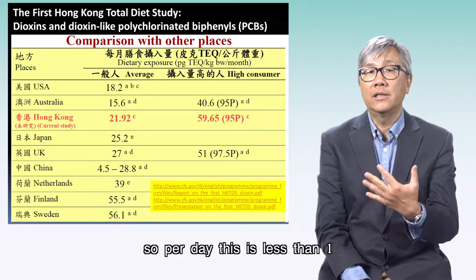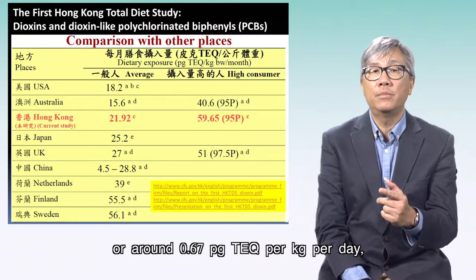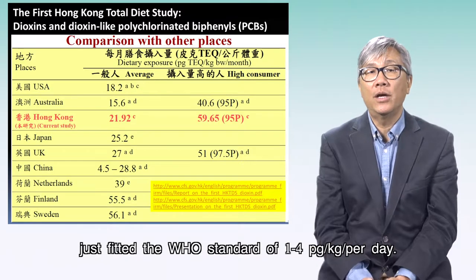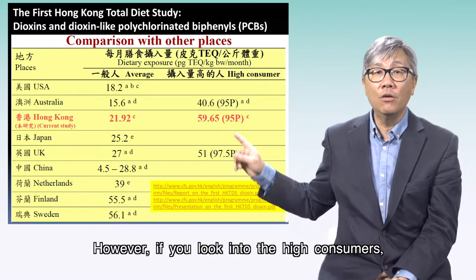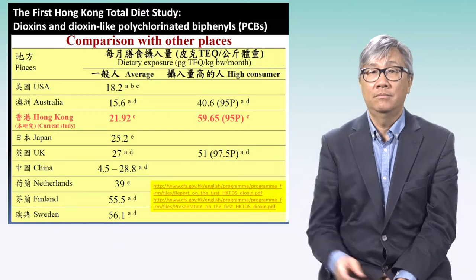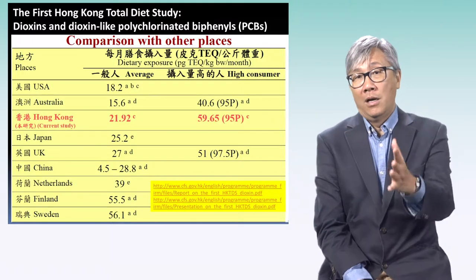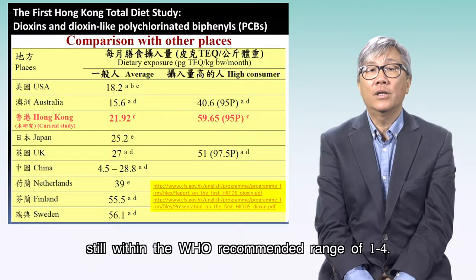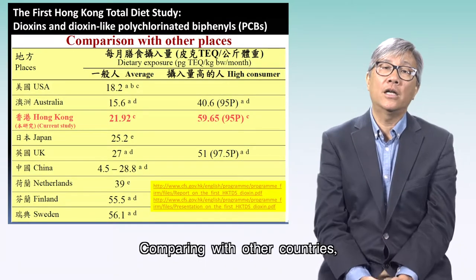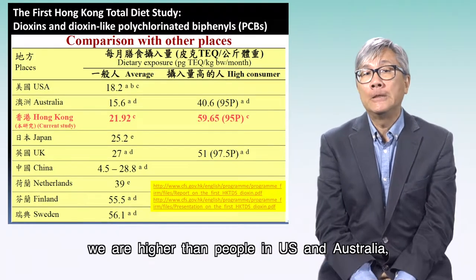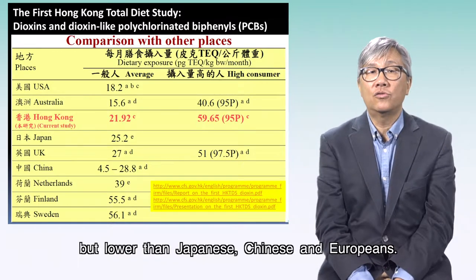Per day, this is less than 1 — around 0.67 pg TEQ per kg per day — just fitting the WHO standard of 1 to 4 pg per kg per day. However, if you look at high consumers, they are up to 59.65 pg TEQ per kg per month, around 2 pg per kg per day, still within the WHO recommended range of 1 to 4. Comparing with other countries, we are higher than people in the US and Australia, but lower than Japanese, Chinese, and Europeans.